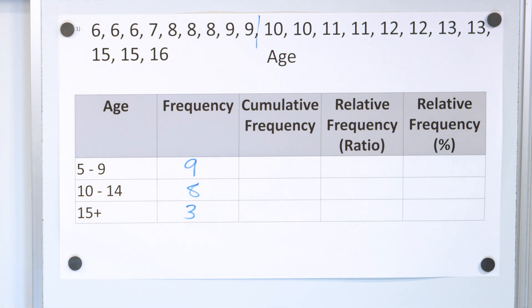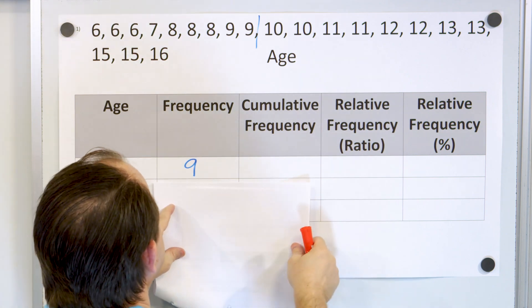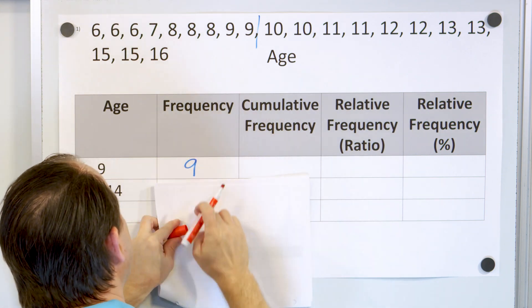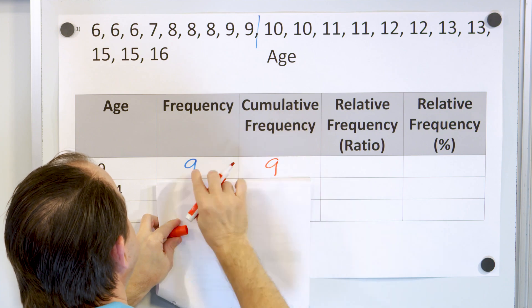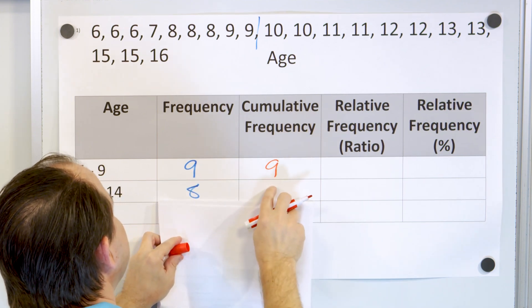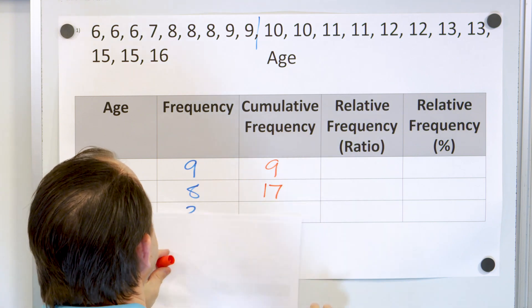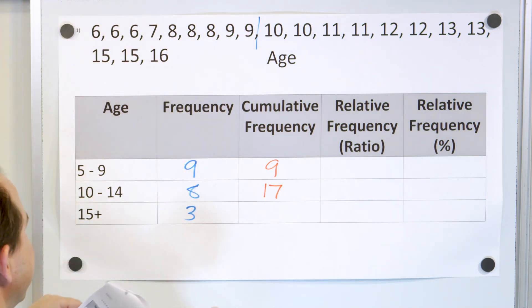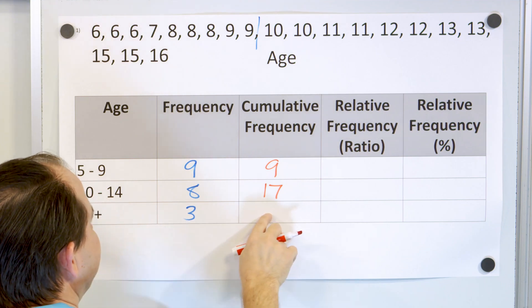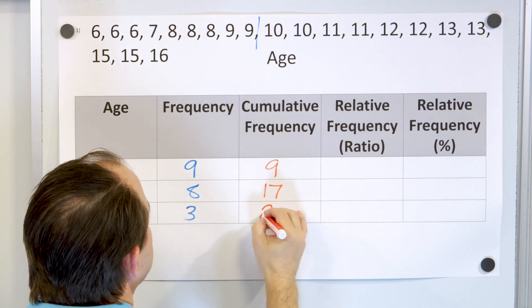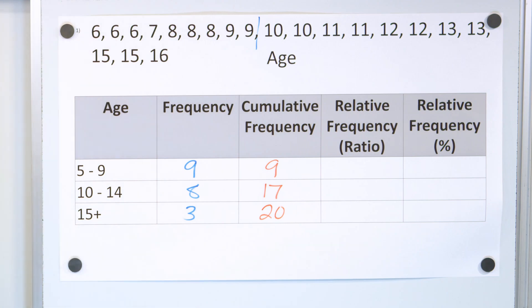Now what do we do for the cumulative frequency? Remember we learned in the last lesson the cumulative frequency is just a running total of this column. So we start out by copying the same number. And then to get this number it's 9 plus 8, which is 17. Goes right here, right? And then to get this position here, it's the 17 here plus the 3 more for a total of 20, like this.